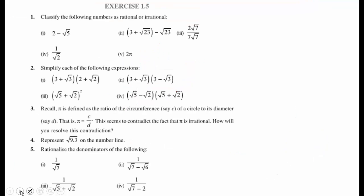Now, classify the following numbers as rational or irrational. In the first sum, root 23 and minus root 23 cancel out, leaving only 3, which is rational. Similarly, in the third sum, root 7 and root 7 cancel, leaving 2 by 7, which is rational. We know addition or subtraction of a rational and irrational is always irrational. Product of rational and irrational is always irrational. Since pi is irrational, the product of a rational number with pi is irrational. So the second, third are rational; the first, fourth, and fifth are irrational.